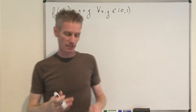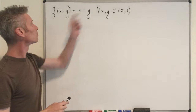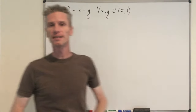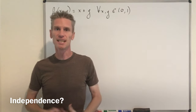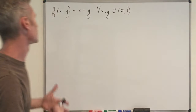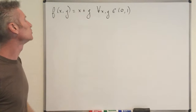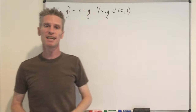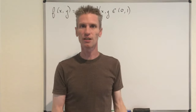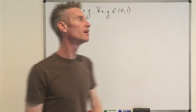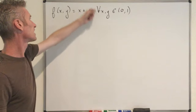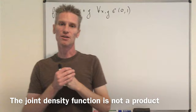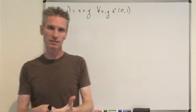First question: is it the case that the two random variables X and Y with this joint density function are independent? The answer is no, because X and Y are independent if and only if the joint density function can be written as the product of a function of x and a function of y. Here, it's clear that x + y cannot be written as such a product, so the two random variables are not independent.